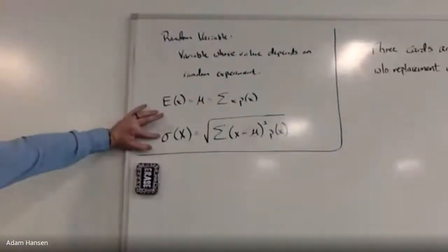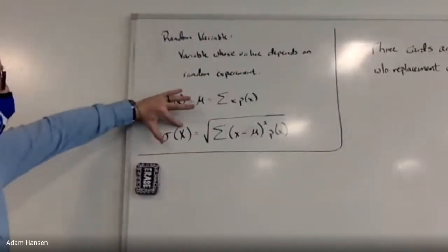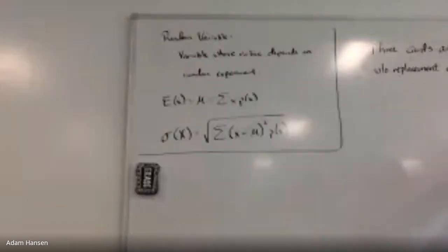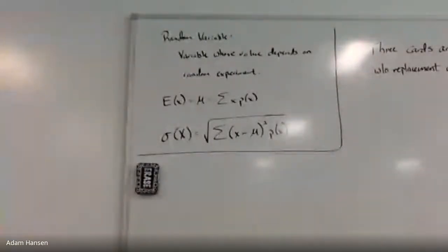So all told, the standard deviation of our random variable is capital sigma. I've got a couple of experiments on the board. Let's go ahead and make a probability distribution and use that to find both the expected value and the standard deviation.